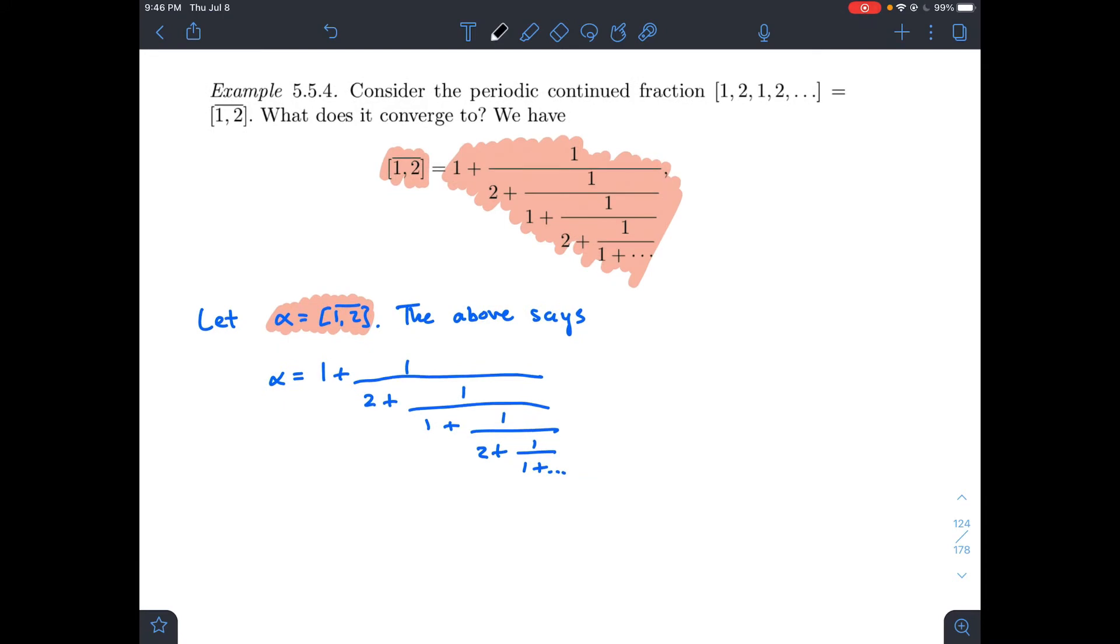What if I highlight this part right here? That little part that I've highlighted is the same as the whole fraction. If this is allowed to go on forever, then these should be the same quantity. So that is really alpha right there.